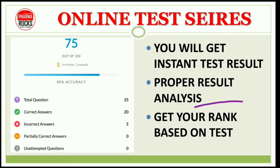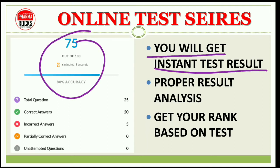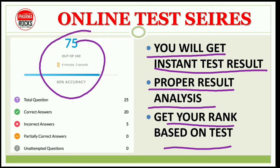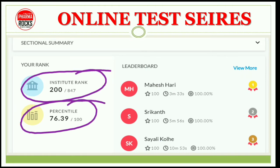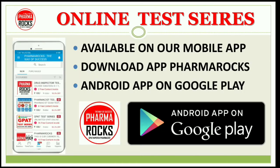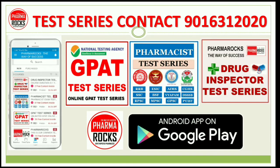Here you will get proper result instantly, proper result analysis, and get your rank based on your performance. You can see your rank, institute rank, percentile, and the list of the topper of that particular test. This facility is available on our mobile app, PharmaRocks. Download the app on Android from Google Play. For more detail and information about this test series, you can contact on 9016312020.